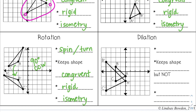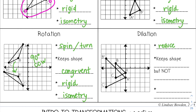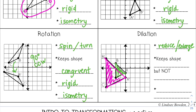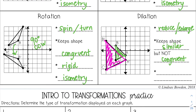The last type is a dilation, which is going to either reduce — meaning make smaller — or enlarge — meaning make bigger — the shape. The green is my pre-image and the pink is my image, and I have enlarged this triangle. A dilation is different because it no longer keeps a shape congruent. However, it does keep it similar but not congruent. Similar means it's the same shape, so I'm not going from a triangle to a quadrilateral, but it will not keep it the same size. Because it does not keep the shape congruent, this is not a rigid transformation and it is not an isometry.